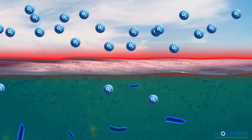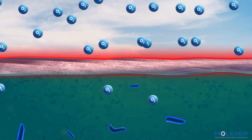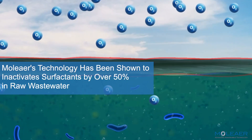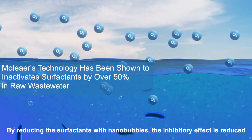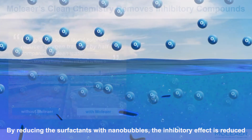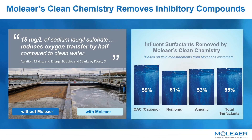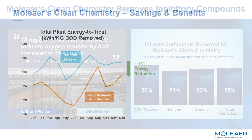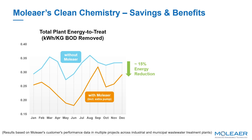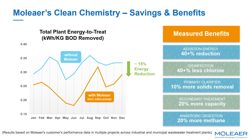This means that the aeration system needs to be twice the size to deliver the oxygen required by the process. Molière's technology has been shown to inactivate over 50% of surfactants in raw wastewater, independent of the surfactant charge. Based on field measurements, Molière's technology has been shown to remove or inactivate QACs and surfactants by over 50%. This is why Molière delivers cost savings and performance improvements year over year and project over project, and these benefits are seen throughout the treatment process — from aeration and chemical savings to increased treatment capacity and solids separation.